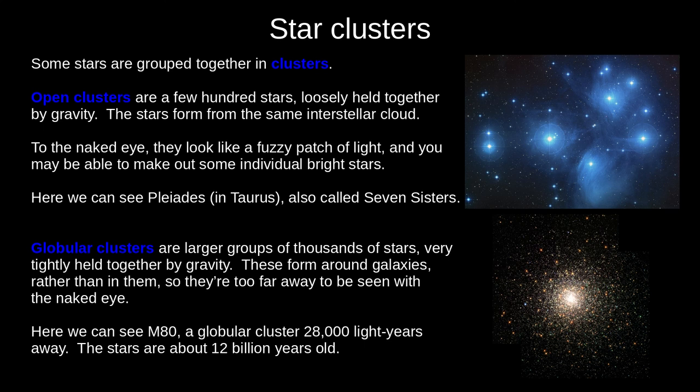Stars often exist in small groups called clusters. There are two main types. Open clusters are a few hundred stars, formed by the same interstellar dust cloud, and are loosely held together by gravity. These look like a faint fuzzy patch of light, often with a few bright individual stars. Here we see Pleiades, also called the Seven Sisters, because the Greeks could see seven bright stars. Globular clusters are too distant to be seen with the naked eye. They are spherical groups of thousands of stars, tightly bound together by gravity, forming on the outskirts of galaxies by processes we don't fully understand yet.